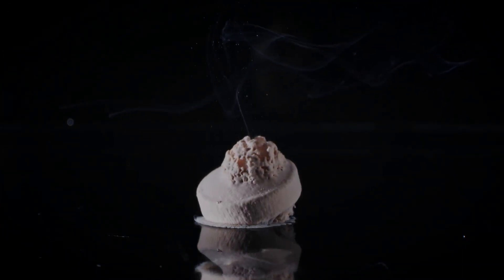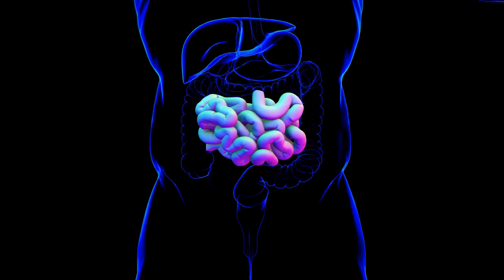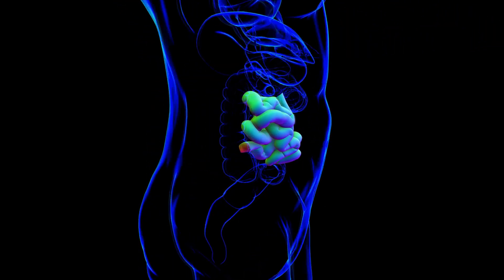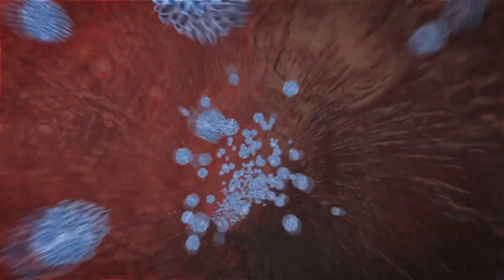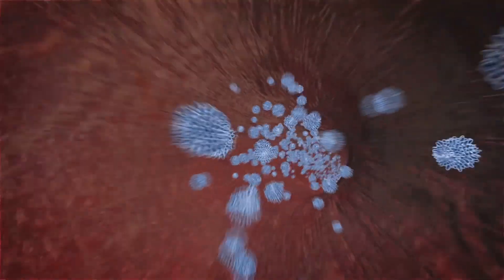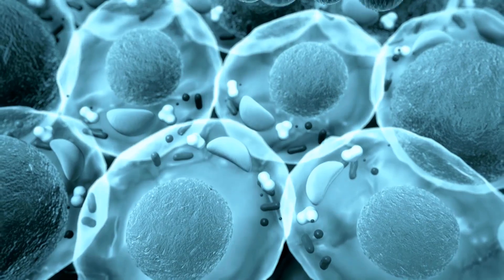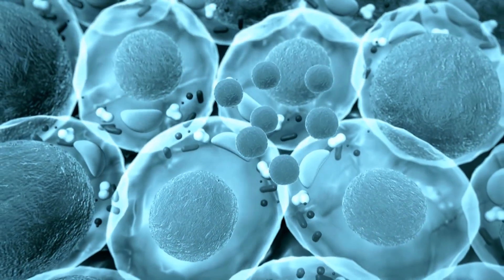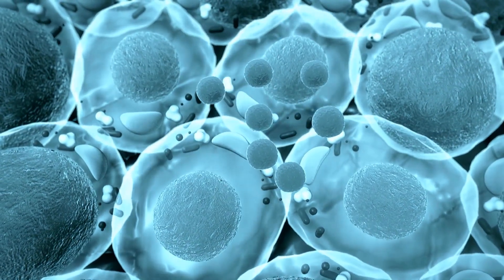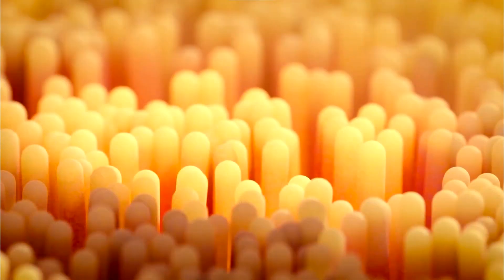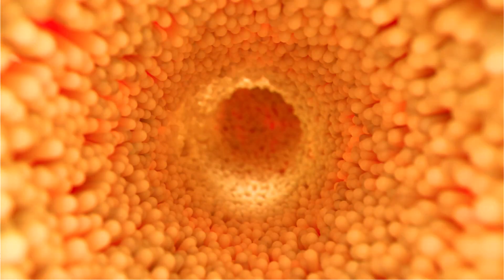If the drug survives the stomach's onslaught, it then enters the small intestine, the primary site for drug absorption. Here, the drug must navigate through the intestinal lining, a selectively permeable barrier that regulates the passage of substances into the bloodstream. The intestinal lining is lined with villi, finger-like projections that increase the surface area for absorption.